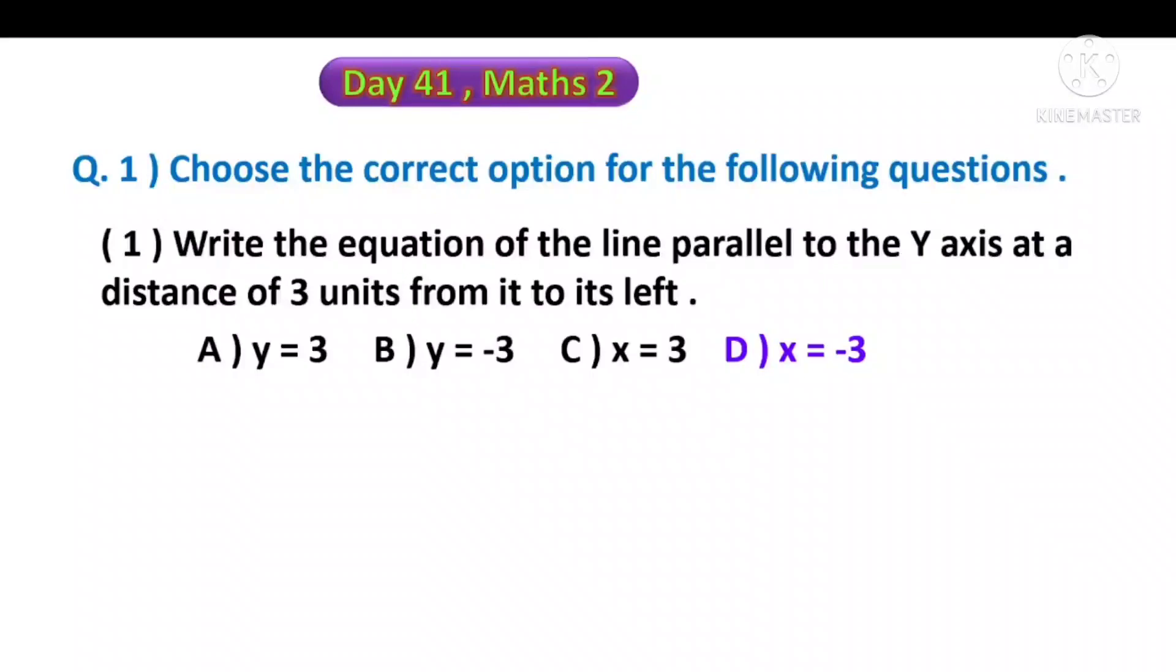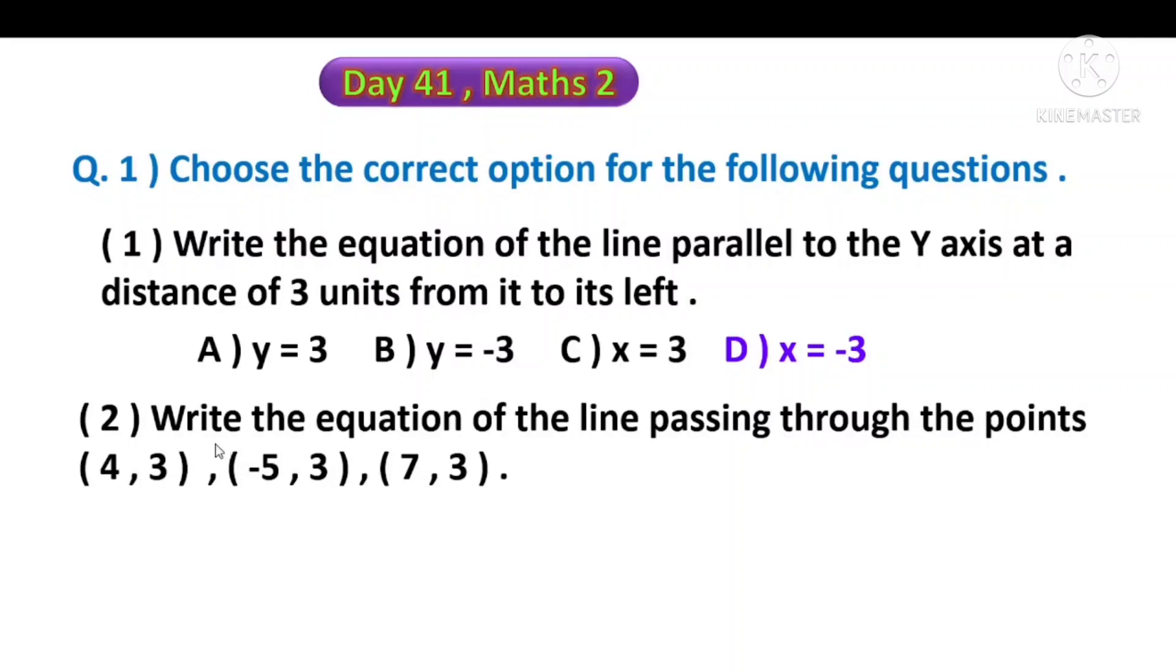Second question: Write the equation of the line passing through the points (4,3), (-5,3), and (7,3). Looking at the coordinates, all y-values are 3. So y is equal to 3. The option is C, y is equal to 3.